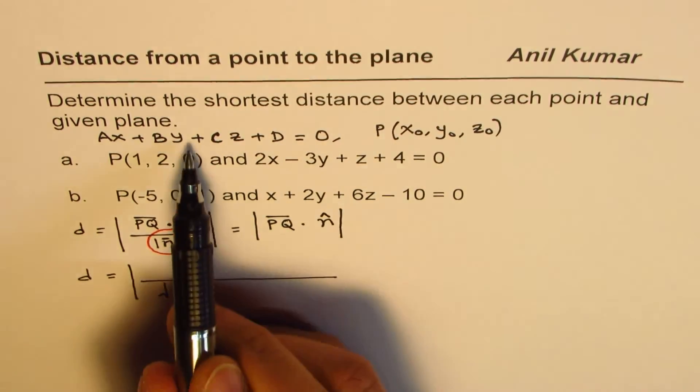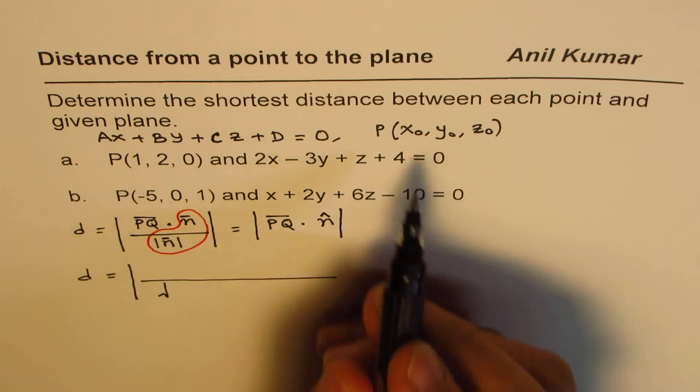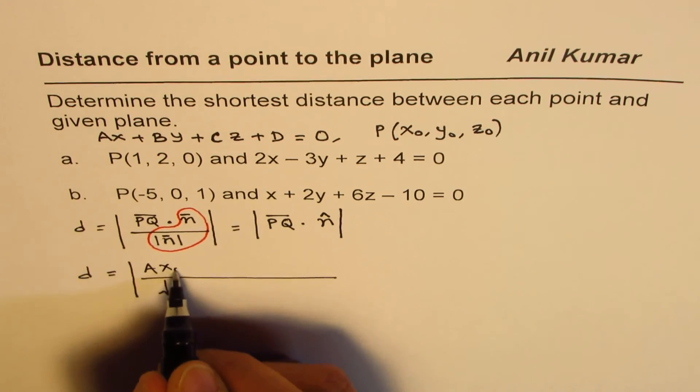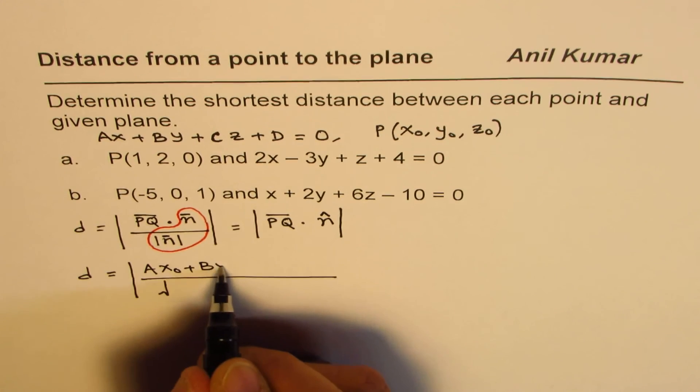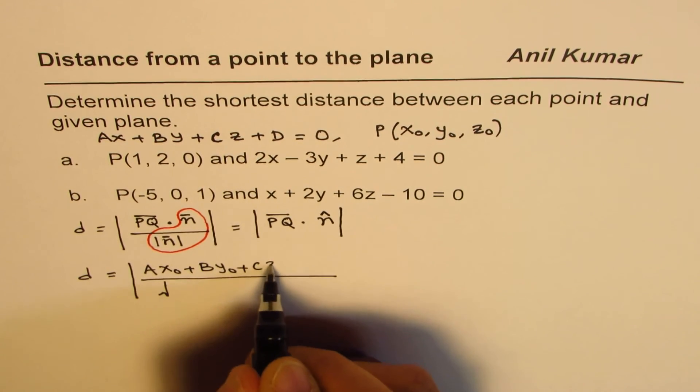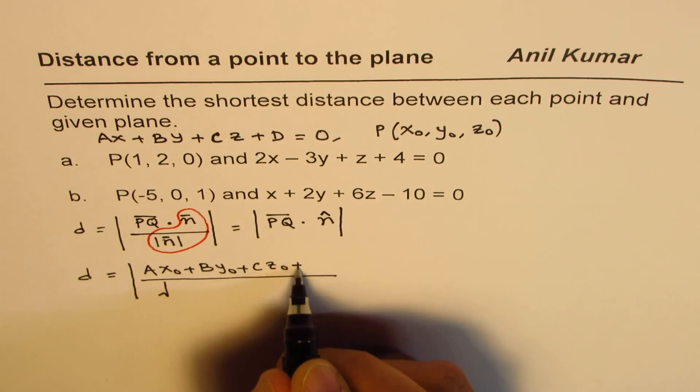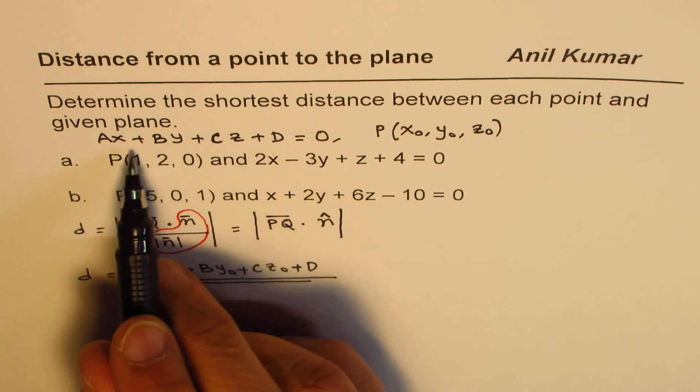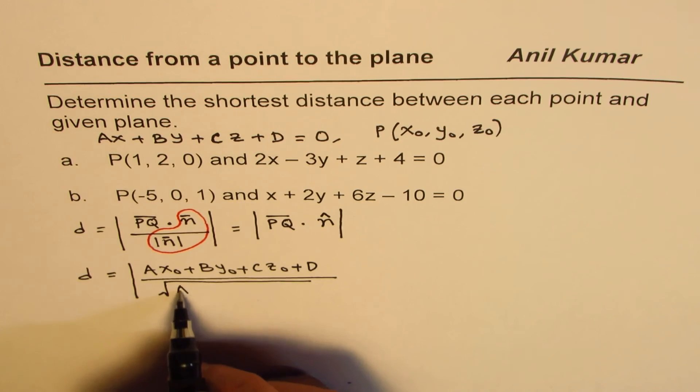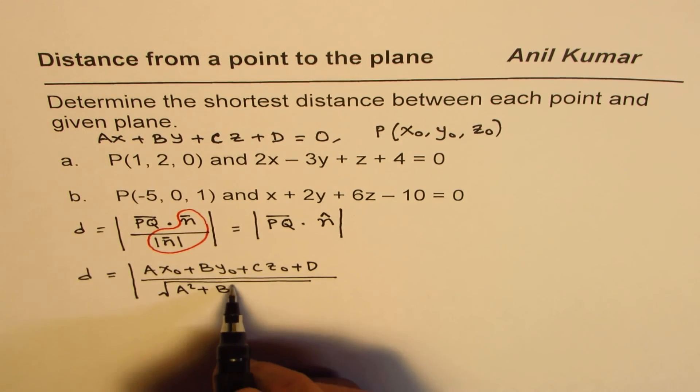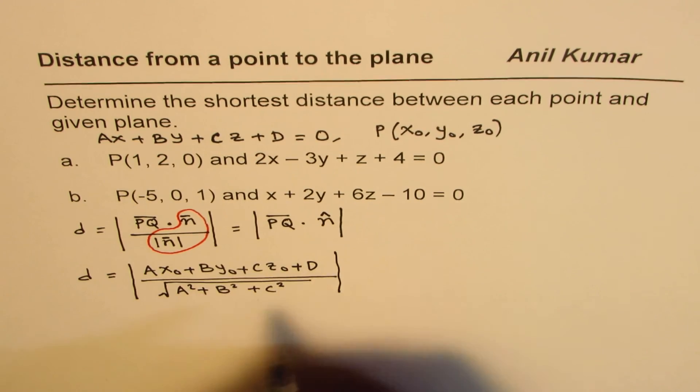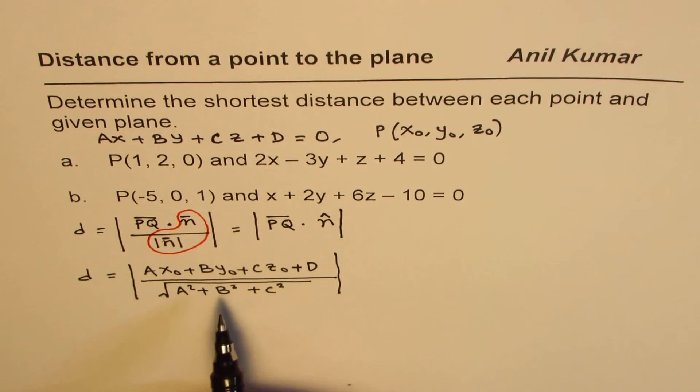So, distance from this point to this plane could be written as, substitute this value in the formula, which is ax0 plus by0 plus cz0 plus d, and then divide by the magnitude of normal, which is square root of a square plus b square plus c square.